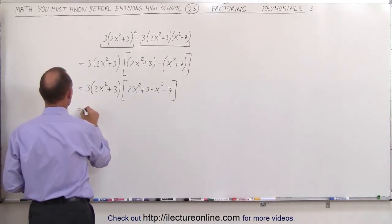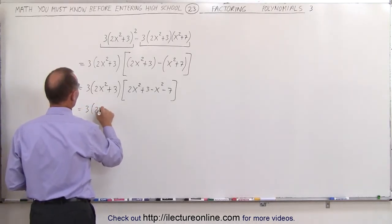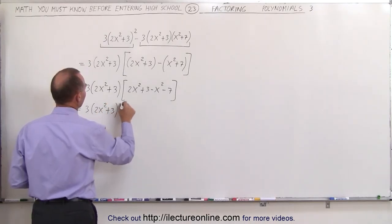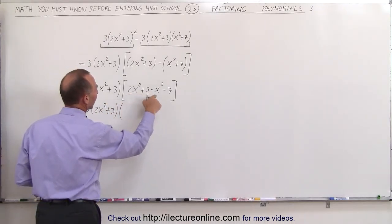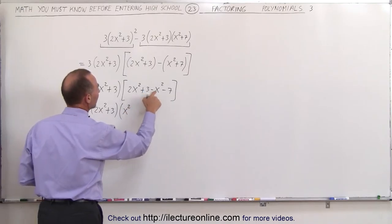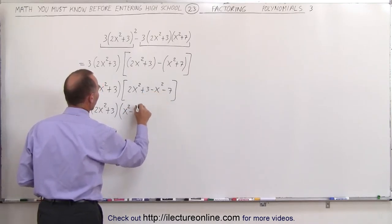When we do that, we get 3 times 2x squared plus 3 times 2x squared minus x squared gives us an x squared, and plus 3 minus 7 gives us a minus 4.